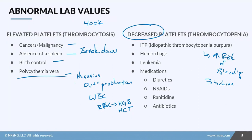Another condition causing decreased platelets is hemorrhage, and those patients may need platelet transfusions. Patients undergoing chemotherapy or radiation for leukemia will also have decreased platelets. Additionally, certain medications can decrease platelet production, including some diuretics, non-steroidal anti-inflammatory drugs, ranitidine, and some antibiotics. Be sure to review any medications if you suspect a clotting issue in your patient.